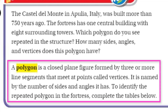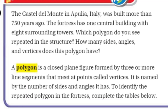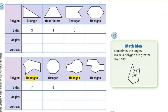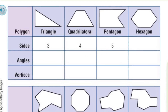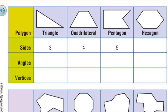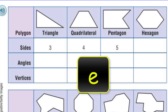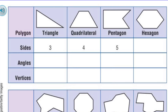To identify the repeated polygon in the fortress, let's complete the table. We have columns for polygon, sides, angles, and vertices. The triangle has three sides — that's like kindergarten. A quadrilateral obviously means it has four sides. A pentagon has five sides. Now we keep going: a hexagon has six sides.